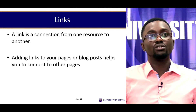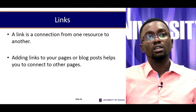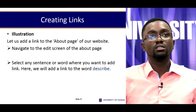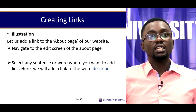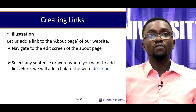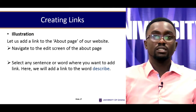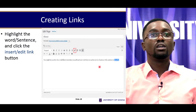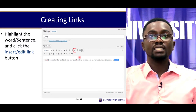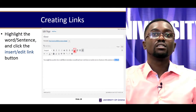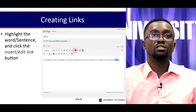A link is a connection from one resource to another. Adding links to your pages or blog helps you to connect to other pages. As an illustration, let us add a link to the About page of our website. Navigate to the edit screen of the About page, then select any sentence or word where you want to add a link — here we will add the link to the word 'describe.' In our rich text box, we select 'describe' and then click on Insert Link, which looks like two chains joined together, as you can see on the slide.